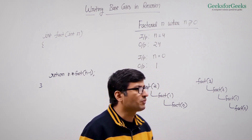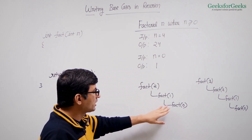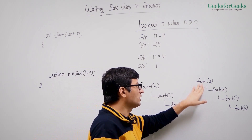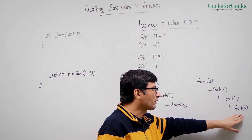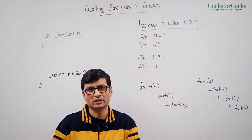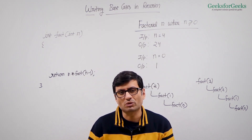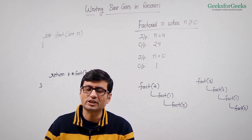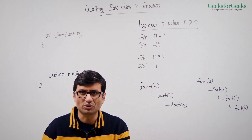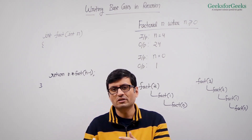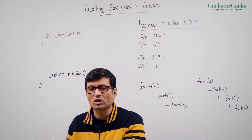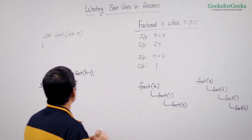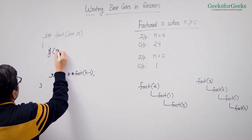If we see the recursion tree for factorial 2, we call for factorial 1, then factorial 0, and after 0 we cannot break it further. For factorial 3, we come to factorial 2, then factorial 1, then factorial 0 — again, we cannot break it further. So 0 is the smallest possible value. Every recursive call ultimately ends up calling 0 because whatever you begin with, it calls smaller and smaller values until it reaches 0. So we write the base case: if n is 0, return 1.